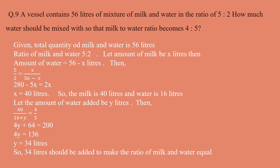Next question: A vessel contains 56 liters of a mixture of milk and water in the ratio of 5:2. How much water should be mixed so that the milk-to-water ratio becomes 4:5? The total quantity is 56 liters and the ratio is 5:2. Let the amount of milk be x liters, then water is 56 − x. Setting up: 5/2 = x / (56 − x). Cross-multiplying gives x = 40 liters of milk.